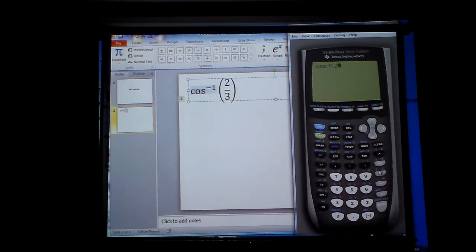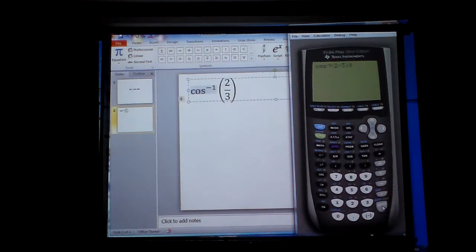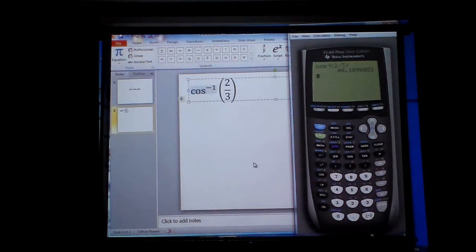Now I can just leave it 2 divided by 3. Close off the parentheses exactly as it is. And hit enter and it tells me this angle is 48.2 when you round it.